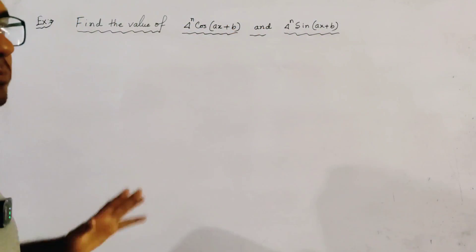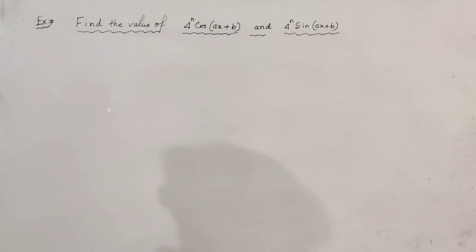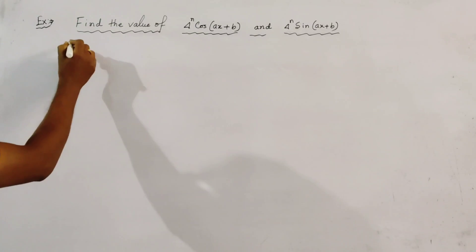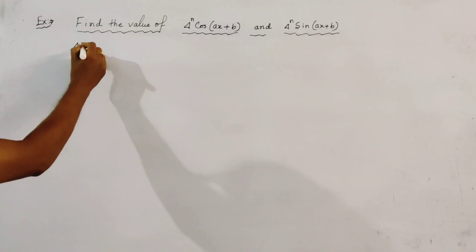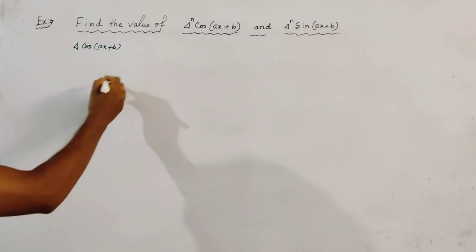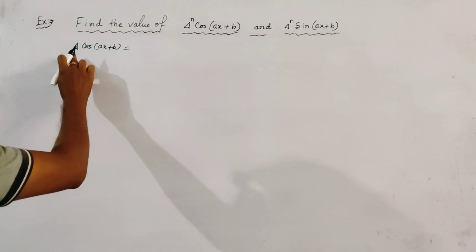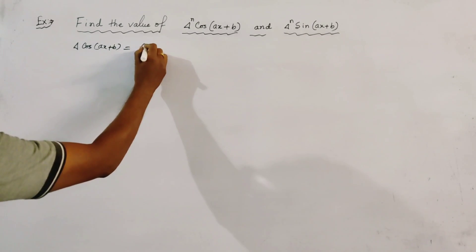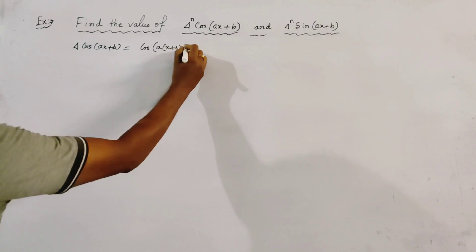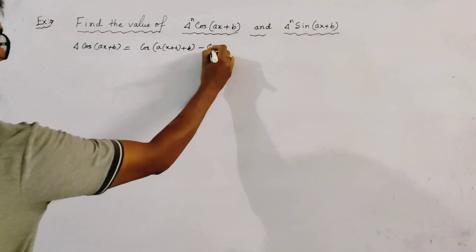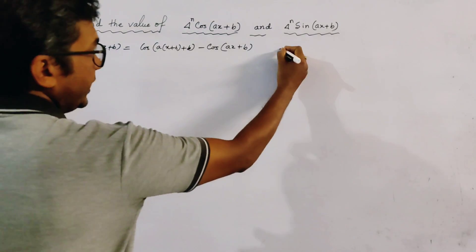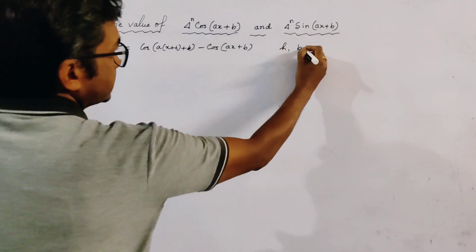These two are the same type of problem. We start with the first problem and find the first order forward difference of cos(ax + b). Using the definition of first order forward difference, we write cos(a(x + h) + b) minus cos(ax + b), where h is the step length.